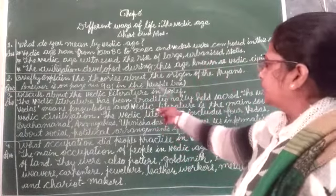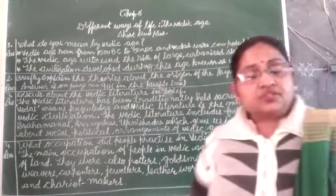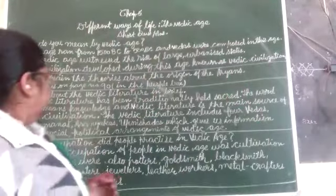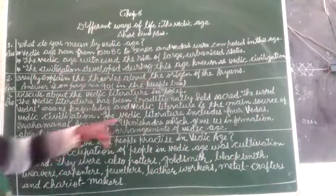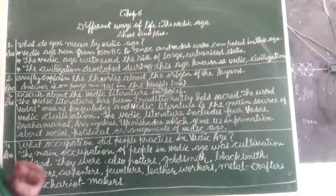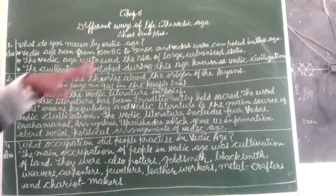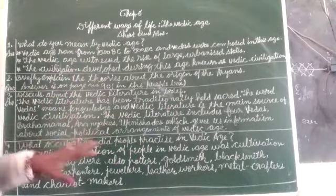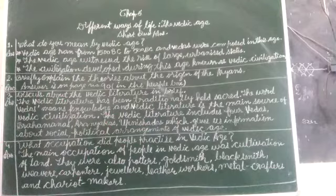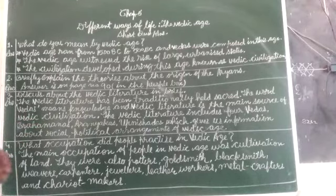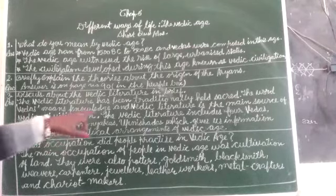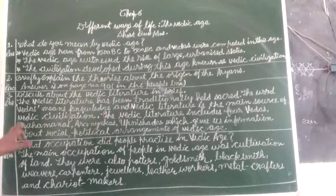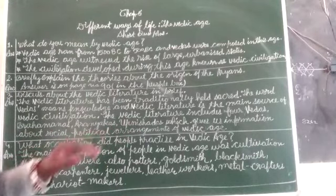The Vedic literature has been traditionally held sacred. The word 'Vedas' means knowledge. Vedic literature is the main source of Vedic civilization — the main source of information about what existed in the Vedic Age. The Vedic literature includes the Upanishads, Brahmanas, and Aranyakas, which gave us information about the social and political arrangements of the Vedic Age.